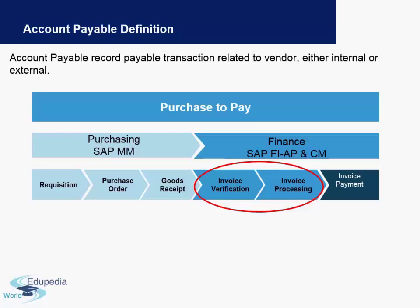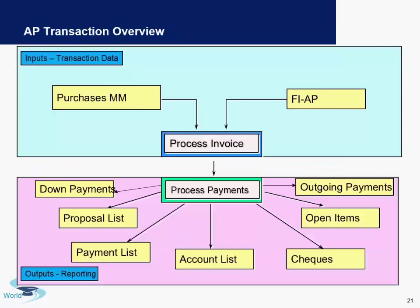What are the inputs in an AP transaction? For Accounts Payable, there is always a purchase recorded from MM and invoicing done in FI — these are the inputs. The outputs are mainly related to payments. For example, one output will be an outgoing payment, meaning you will be making a payment to the vendor whether by check, online payment, or auto payment from your bank.